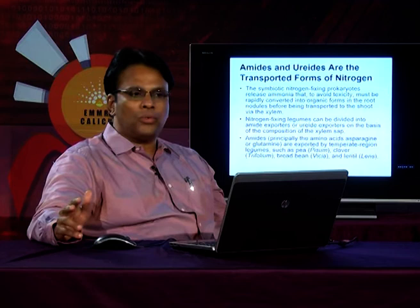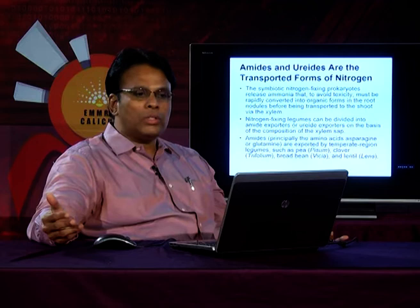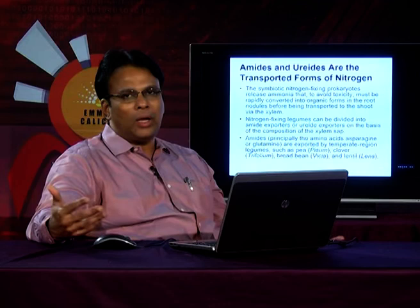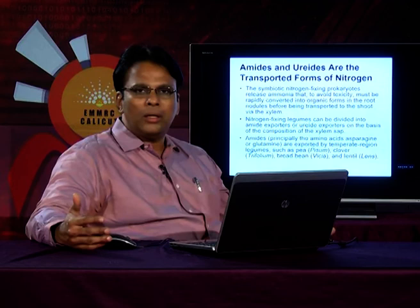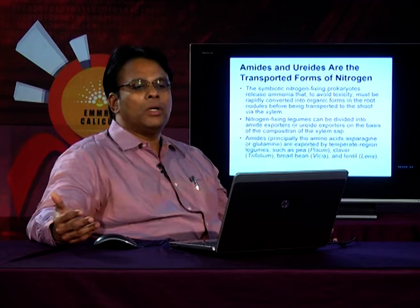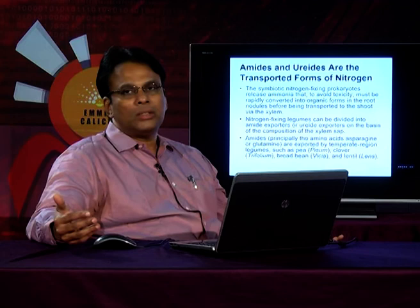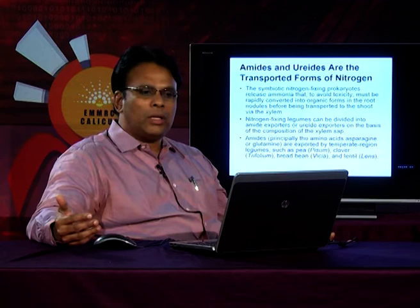Generally, amides and urides are the transported forms of nitrogen. The symbiotic nitrogen-fixing prokaryotes release ammonia, and to avoid toxicity it must be rapidly converted into organic forms. The ammonia released by nitrogen fixation is immediately converted into an organic form in the root nodules before being transported to the shoot via the xylem. Nitrogen-fixing legumes can be divided into amide exporters or uride exporters based on the composition of the xylem sap.